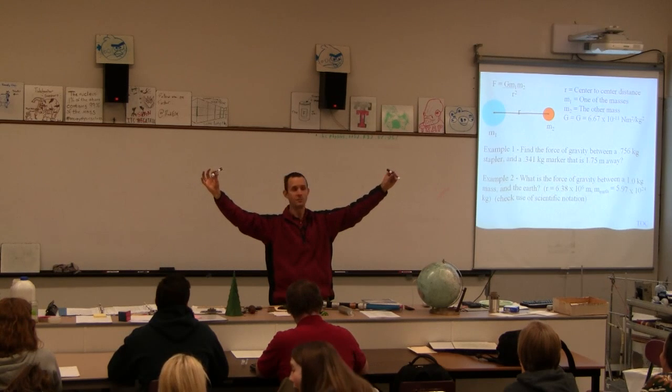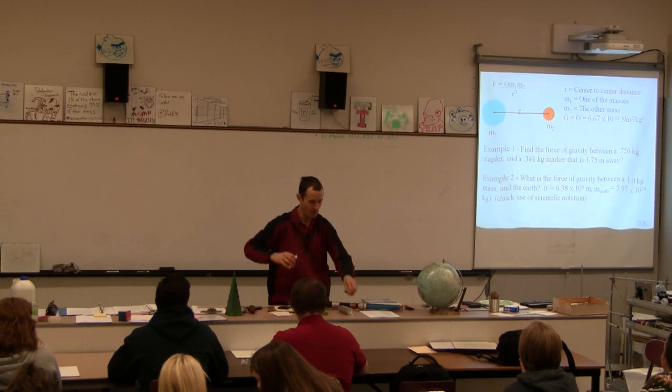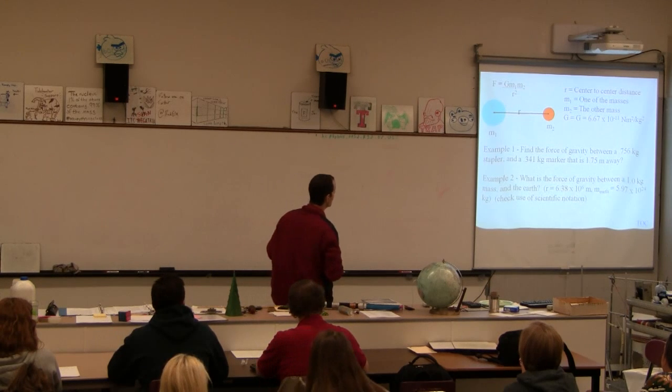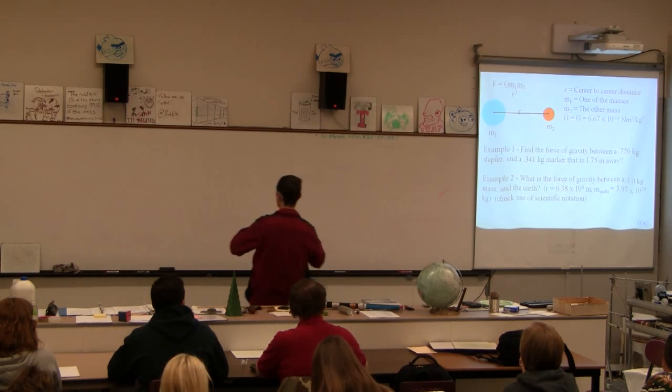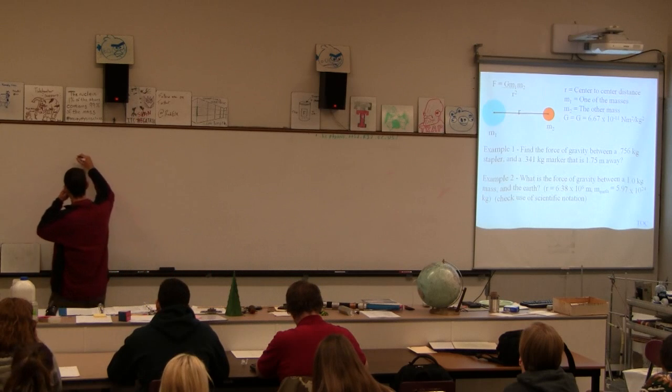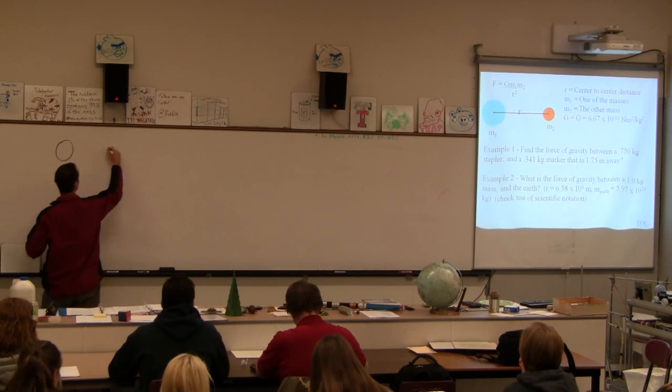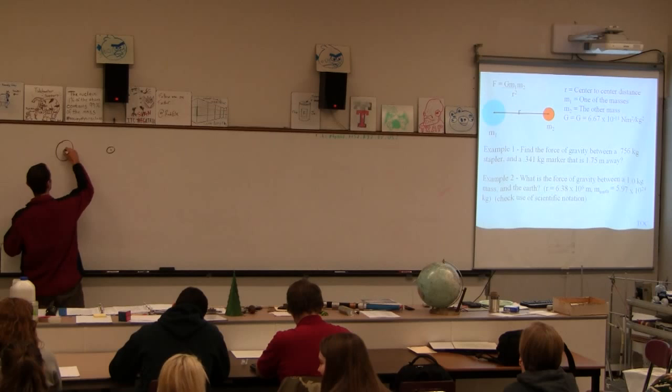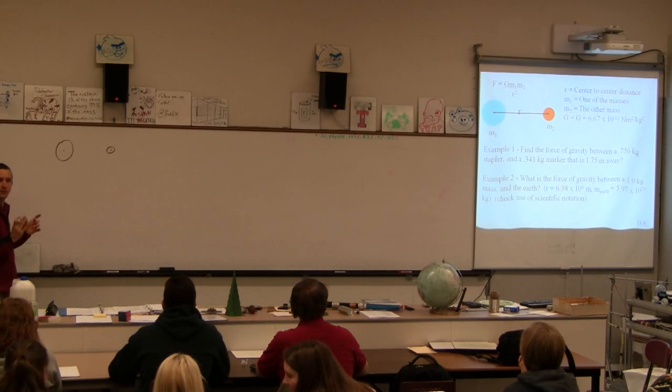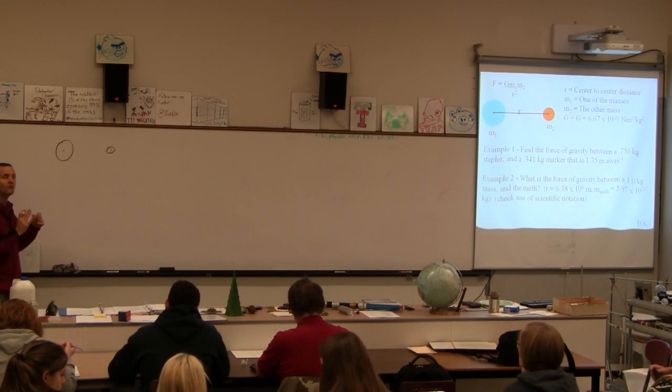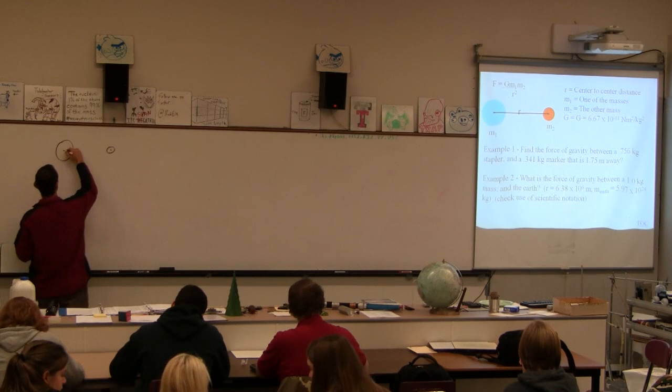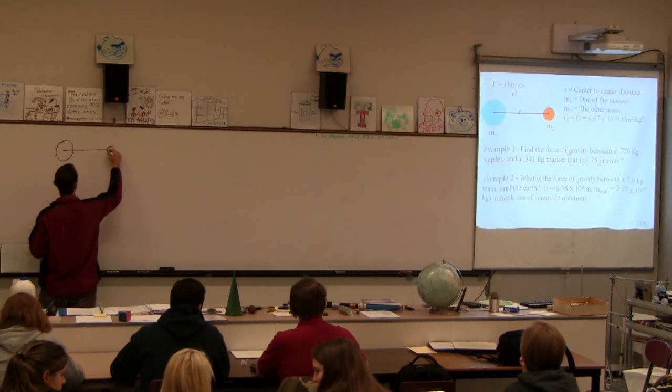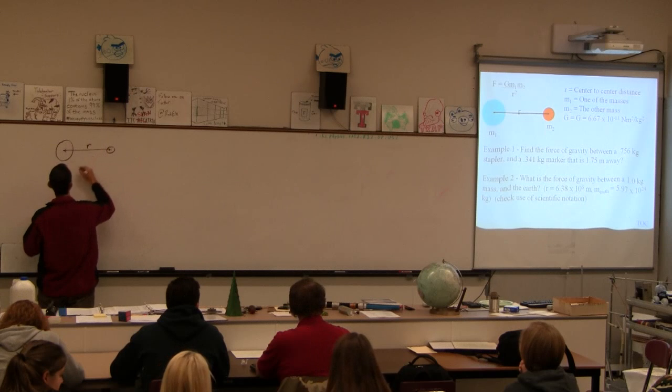Assuming they're sufficiently far apart that you could treat them as points. So, this is our big formula there, right? The force of gravity, if you've got these two masses, and if these things are spheres, or if they're point charges, if they're point masses. If they're points, or if they're spheres, this is an exact relationship.